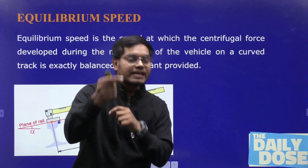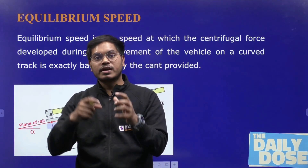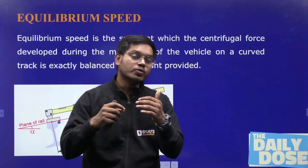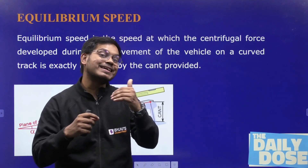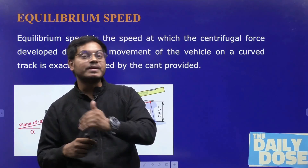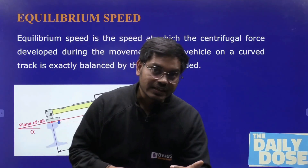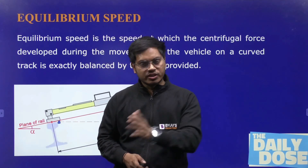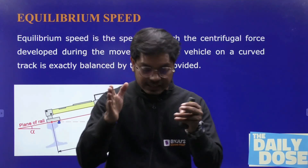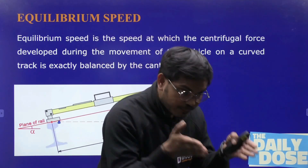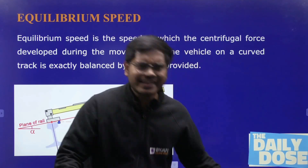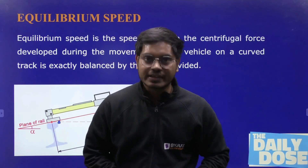The cant which is provided corresponding to equilibrium speed — or in other words, the cant we provide with respect to the equilibrium speed — is basically your actual cant. In general terms, the cant which you have provided after all the arrangements is called the actual cant.